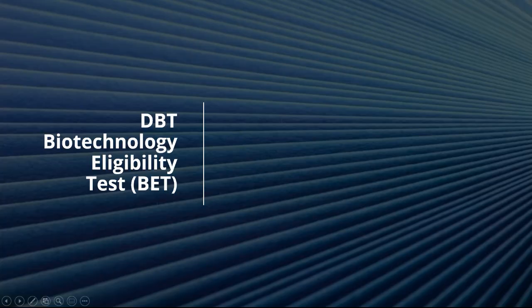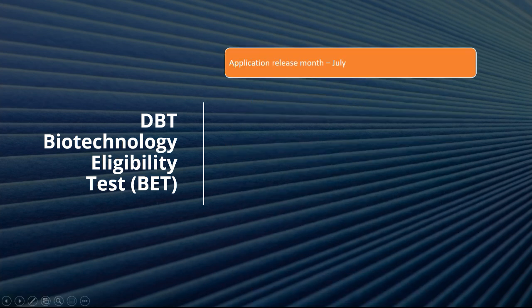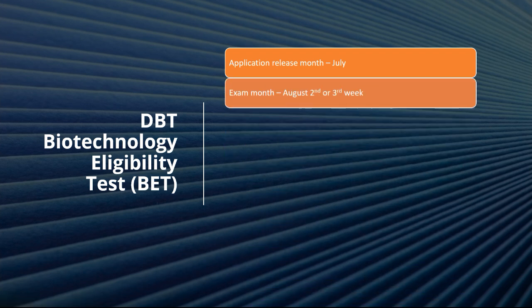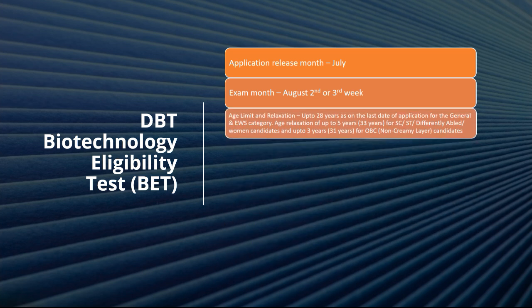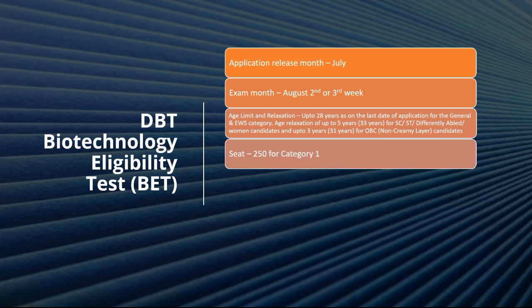DBT-JRF is also known as the Biotechnology Eligibility Test or BET. The important factors are: the application release month is July, the exam is held in August — second or third week. The age limit is up to 28 years on the last date of application for general and EWS categories. Five years of age relaxation is provided for SC/ST and other categories, making it 33 years. For women and OBC categories, three years extra age limit is provided, making it 31 years.